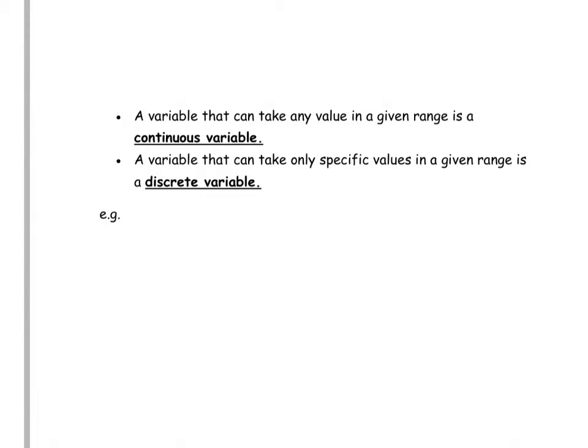There's also another variation within your data — you can have continuous data or discrete data. A variable that can take any value in a given range is a continuous variable. Continuous variables you'll come across are things like time, weight, and length, which can take any value — for example, people in your class could have varying different heights.